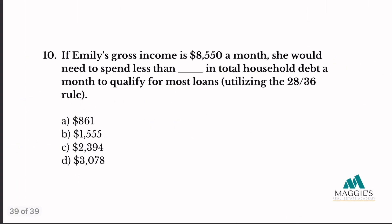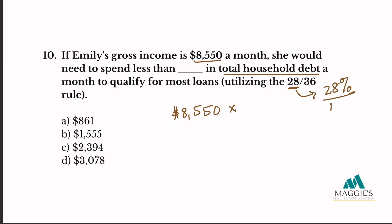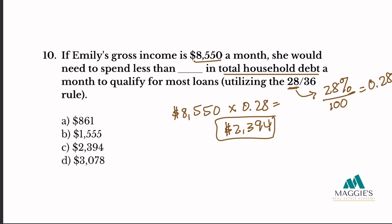Number ten: Emily's gross income is $8,550 a month. She would need to spend less than what amount in total household debt per month to qualify for most loans using the 28/36 rule? Since we're looking at total household debt only, we use 28%: $8,550 × 0.28 = $2,394. That is her maximum housing ratio amount. My answer is C.